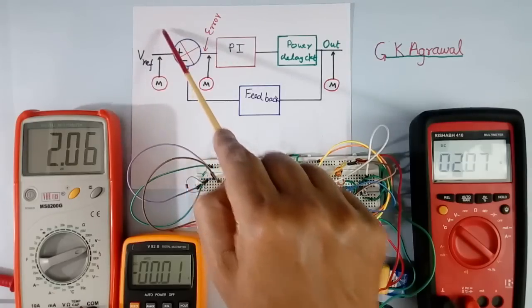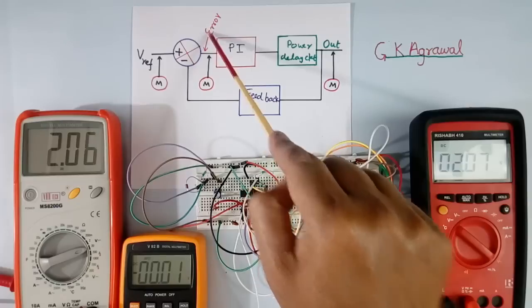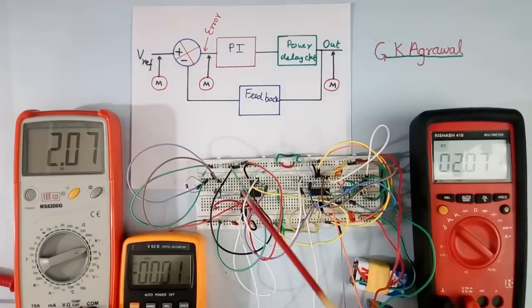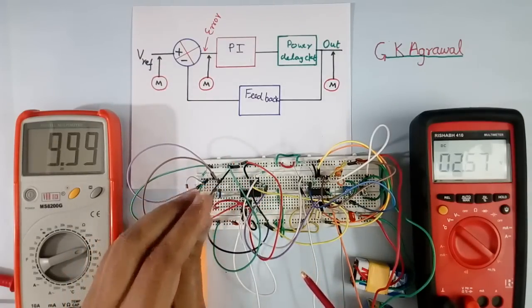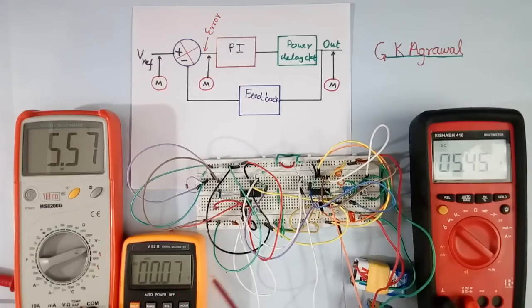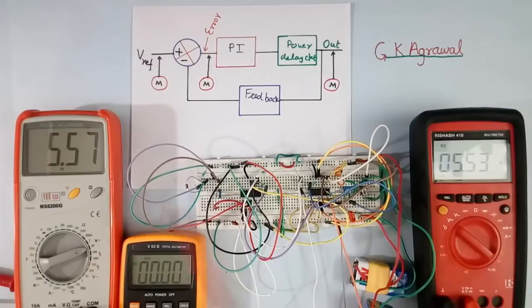Now if I increase this input, error will come because this voltage and this voltage will not be equal. Error will come and this output will start increasing, then error will start reducing. I will increase the voltage here. See voltage has increased, now suddenly error came and output voltage is increasing and this error is reducing. Now both have become approximately equal, so this error is also coming to 0. Very small difference — 0.03 V — because the multimeter will have some accuracy problem and there will be component tolerance.